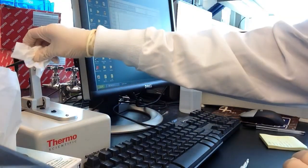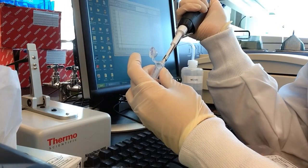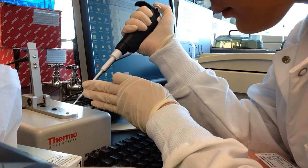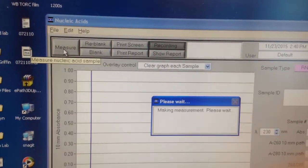Wipe the pedestals with Kimwipes again, and then load between 0.5 to 2 microliters of your sample, depending on how precious your samples are. And then go ahead and click measure.